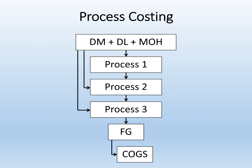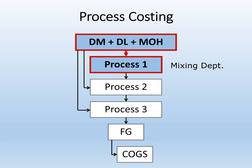By contrast, a firm chooses process costing if it thinks of its work as a series of processes that all units must go through. For example, let's say that a firm manufactures soda. It may make cola and root beer and ginger ale and orange soda, but all soda that it makes has to go through the same set of basic processes. In the first process, the mixing department, water and flavoring and either sugar or artificial sweetener are combined.